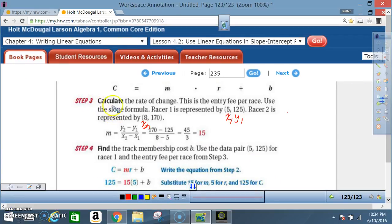Step 3. Calculate the rate of change. This is the entry fee per race. Use the slope formula. Racer 1 is represented by 5, 125. Racer 2 is represented by 8, 170.